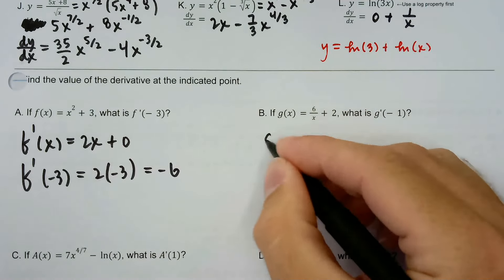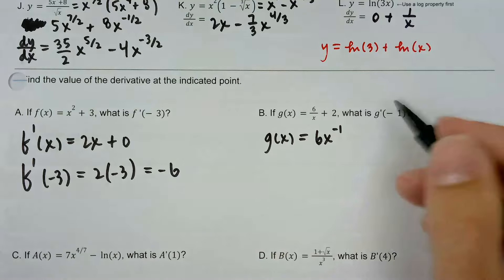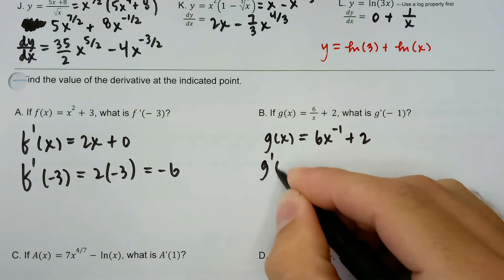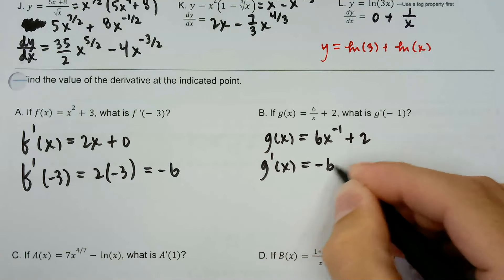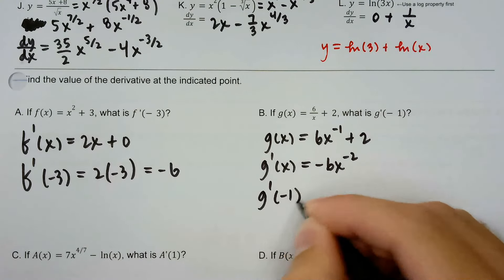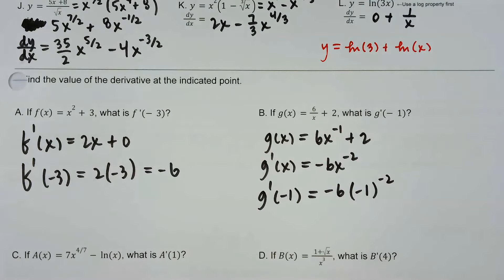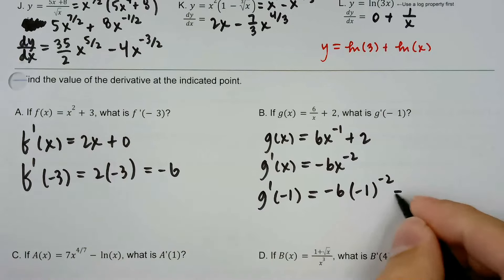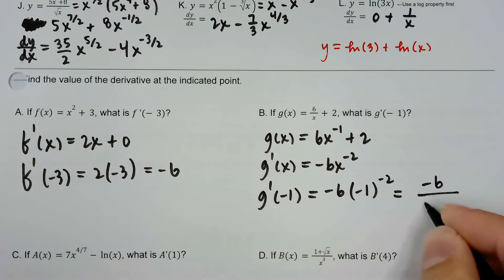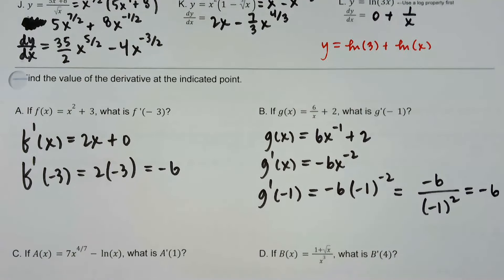I see a fraction, so I need to rewrite that first — either by writing it as a power of x or doing some algebra. g'(x): I'm going to apply the power rule — negative 6 times x to the negative 2 — and then the derivative of 2 is zero. Then g'(-1): that's going to be negative 6 divided by negative 1 to the second power, because that negative exponent goes into a denominator. So negative 6 over negative 1 squared — that's equal to negative 6.